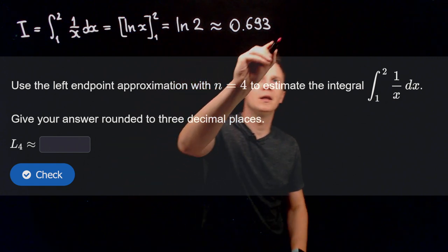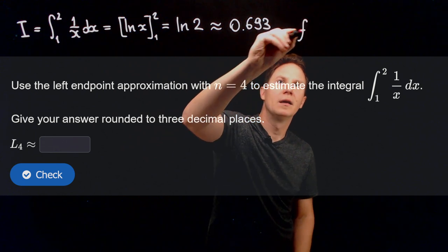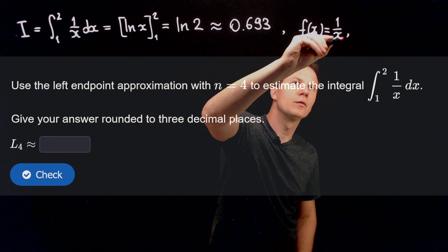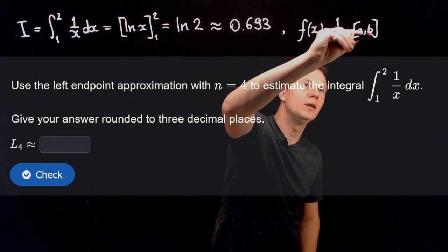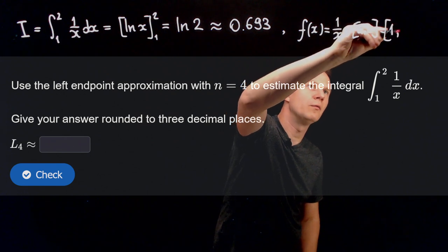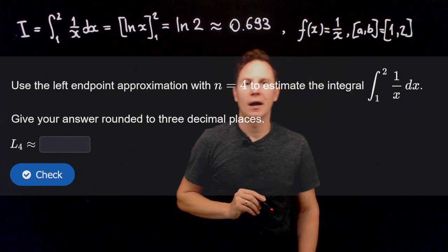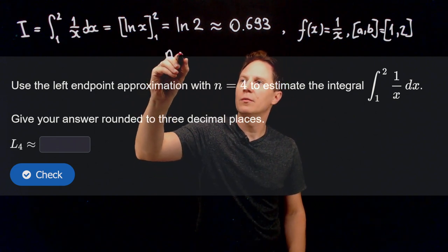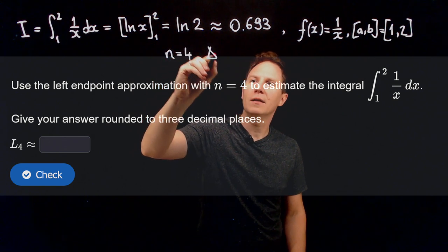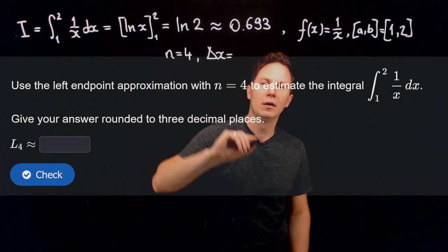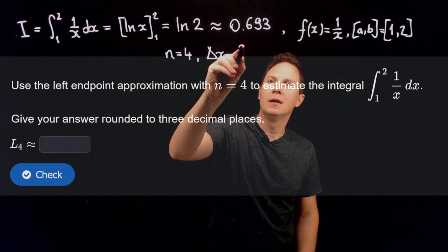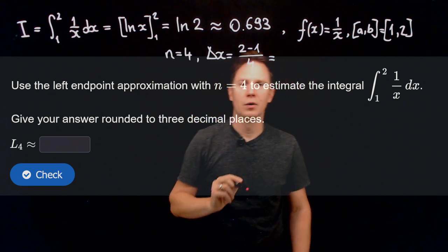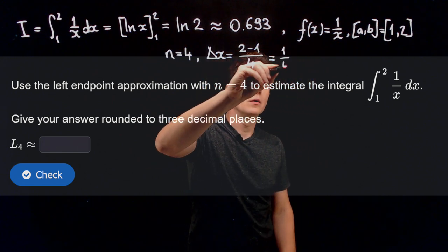The function we are integrating is f of x equals 1 over x. The interval of integration is from 1 to 2, and n equals 4 subintervals. That means delta x, the length of each subinterval, is the length of the interval divided into four equal parts: one fourth, or 0.25.